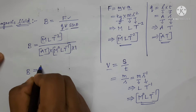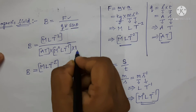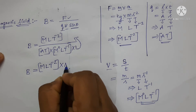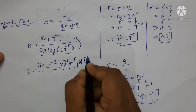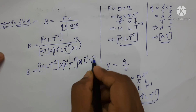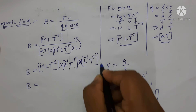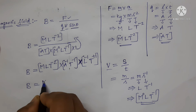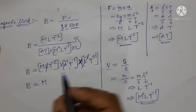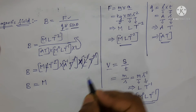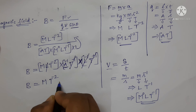So B equals, simplifying: [M L T⁻²] divided by [A T] into [L T⁻¹]. Bringing the denominator to the numerator gives A⁻¹ T⁻¹, and L⁻¹ T⁺¹. Simplifying: L¹ and L⁻¹ cancel, and T¹ and T⁻¹ cancel. The remaining terms are M, T⁻², and A⁻¹. So the dimensional formula for magnetic field is [M A⁻¹ T⁻²].